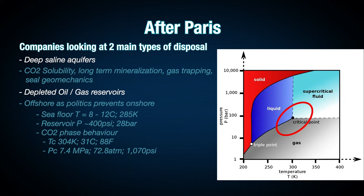When dealing with offshore depleted reservoirs, you're typically dealing with seafloor temperatures of around 10 degrees centigrade, and reservoir pressures maybe down to about 400 psi. When you look at these temperatures and pressures relative to the CO2 critical point and the CO2 phase behaviour diagram shown on the right, we tend to start operating in the red circle around the critical point on the liquid-gas transition. This makes things more complicated for the reservoir simulator, and there have been many advances in GEM to model phase behaviour around these difficult CO2 behaviour areas.